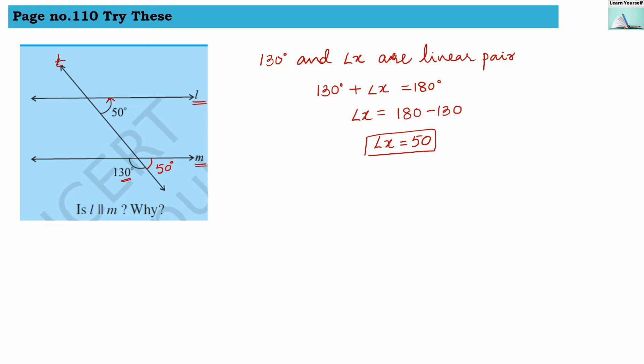Now if we see this angle and this angle, they are corresponding angles and they are equal. So line l is parallel to m, because corresponding angles are equal. Since these corresponding angles are equal, we can say l is parallel to m.